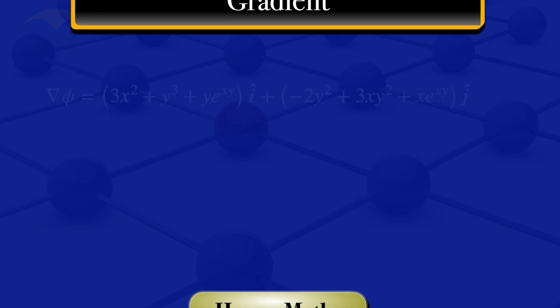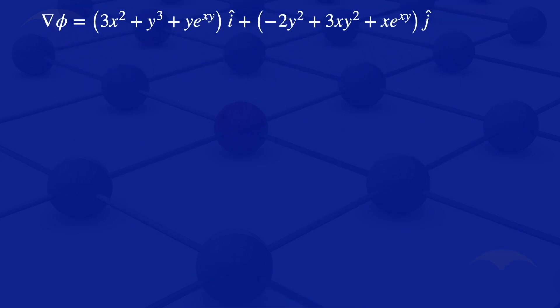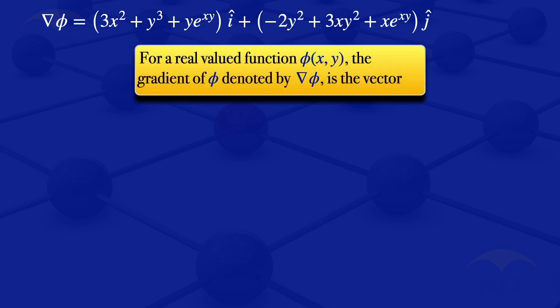We are given grad φ and we want to find φ. Since grad φ is in two variables x and y, by definition grad φ has two components: grad φ equals the partial derivative of φ with respect to x · i, plus the partial derivative of φ with respect to y · j.